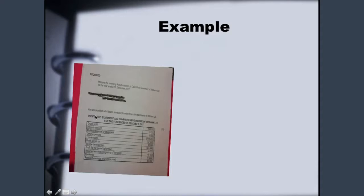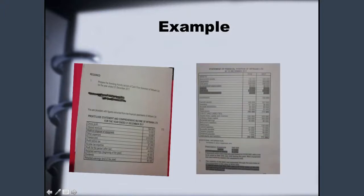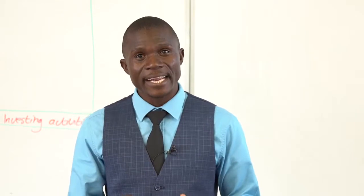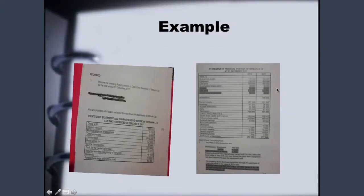To answer the question, you go to the additional information. We will be given two parts of data. Remember, to do a cash flow statement you need the financial statements of the business for two consecutive years — this is 2016 and this is 2017. What is required from me is to prepare the investing activity part.